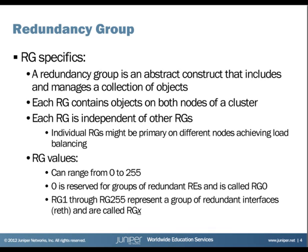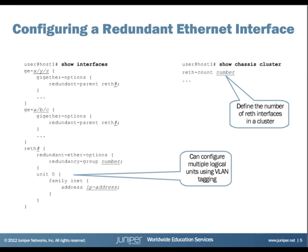Routing engine 0 and routing engine 1 in the control plane are present within redundancy group 0. Redundancy groups 1 through 255 are for redundant interfaces, called reths. One node will be active — that will be the active interface within that redundancy group configuration, just like in the control plane. What we're showing here is the actual configuration of the redundant interfaces.